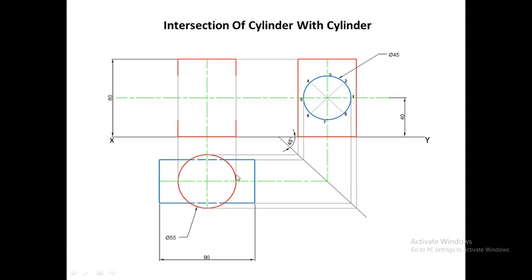Some portions of the top view are shown with dotted lines because that part of the horizontal cylinder lies inside the vertical cylinder. When the horizontal cylinder is inserted into the vertical cylinder, those portions from the boundary on either side will be hidden. The portion outside the vertical cylinder remains visible and is shown with a solid line. Now we project the front view from the side view and top view.